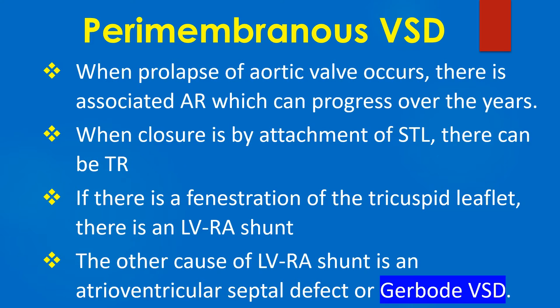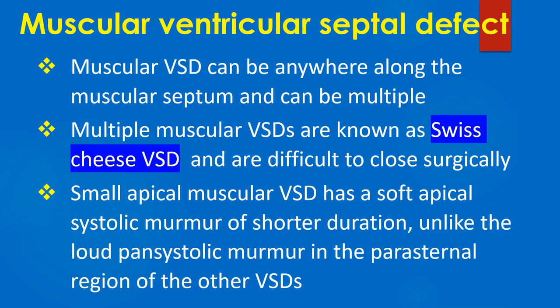The other cause of LV-RA shunt is an atrioventricular septal defect or Gerbode VSD. Muscular VSD can be anywhere along the muscular septum and can be multiple. Multiple muscular VSDs are known as Swiss cheese VSD, which are very difficult to close surgically. Small apical muscular VSD has a soft apical systolic murmur of shorter duration, unlike the loud pansystolic murmur in the parasternal region of other VSDs. This is because the defect is occluded by ventricular muscle contraction in the latter part of systole.